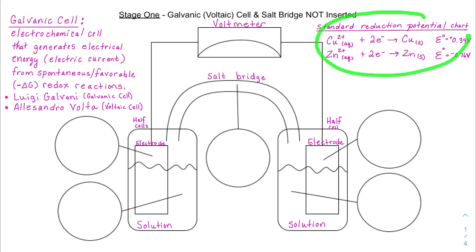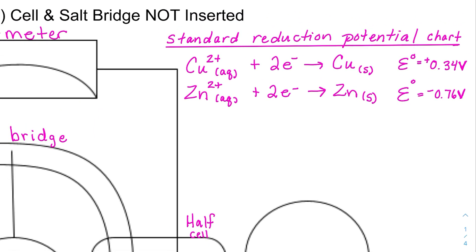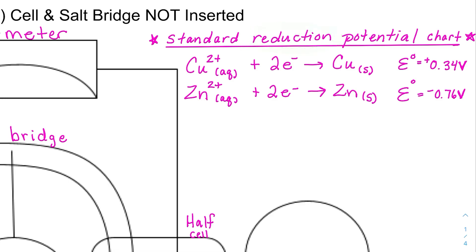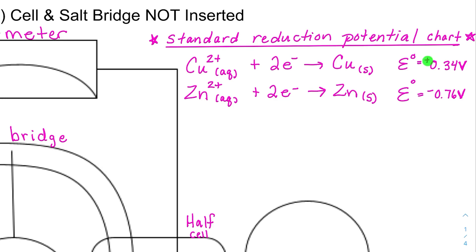To set up a galvanic cell with copper and zinc, look up a standard reduction potential chart in your book or online. Find the two half reactions — copper and zinc — that you want to use for your half cells. You'll notice they're both written as reductions, both at standard states indicated by the naught sign, and each has a cell potential or voltage attributed to it. One is positive and one is negative.